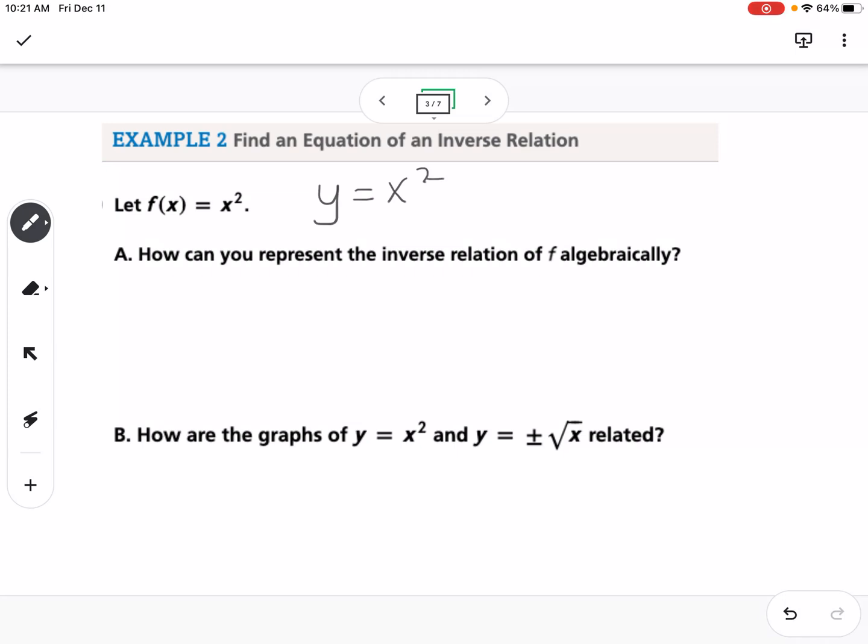And then what we're going to do is switch the x and the y, just like we did on the previous table. So we're going to write this as x equals y squared, and then we solve for y. So to solve for y, we would take the square root of both sides, and we know when we take the square root of something, we have two answers. We have a positive and negative square root of x. So that would be our inverse of x squared.